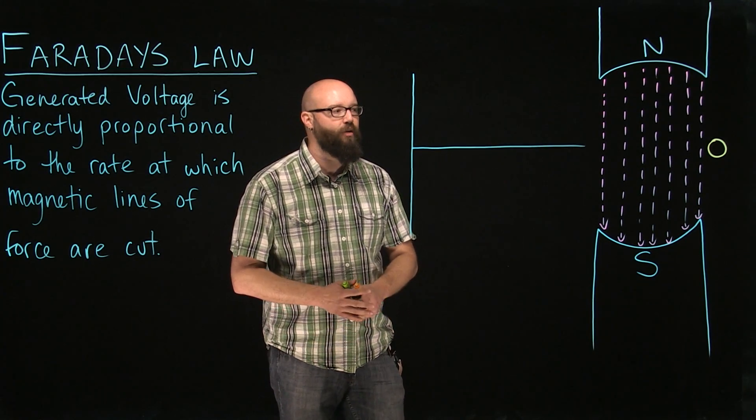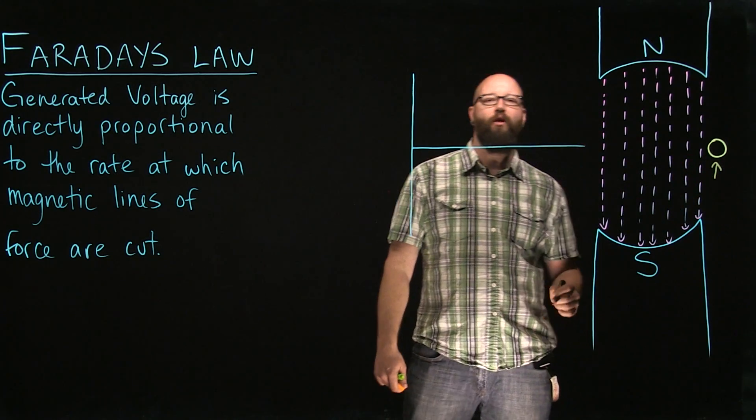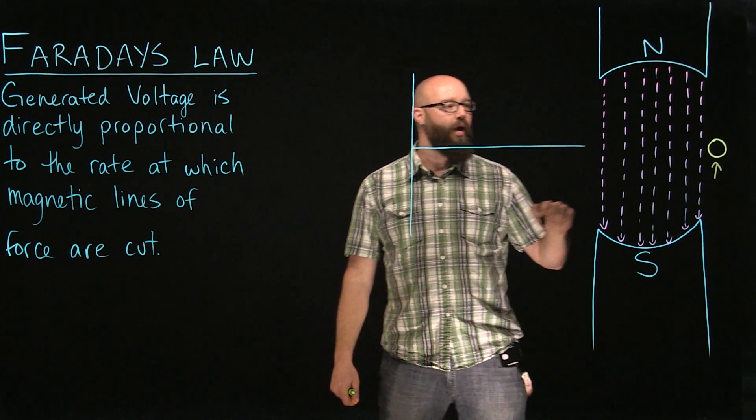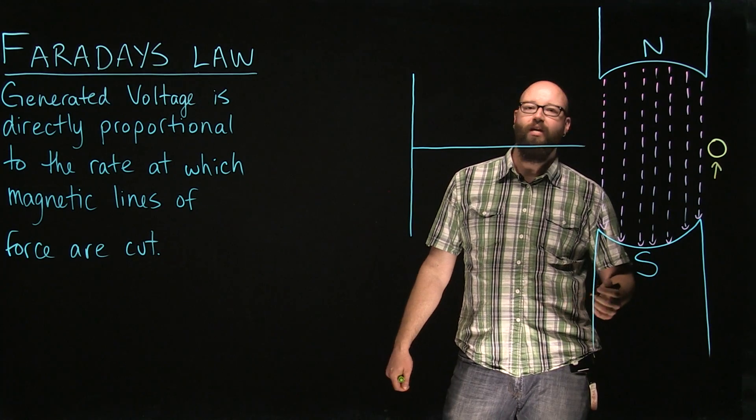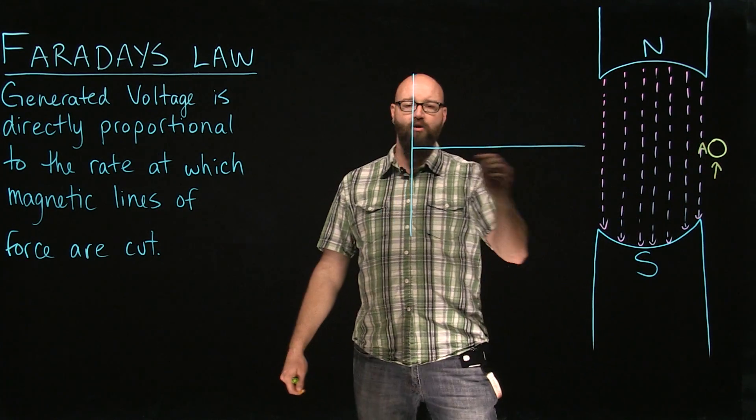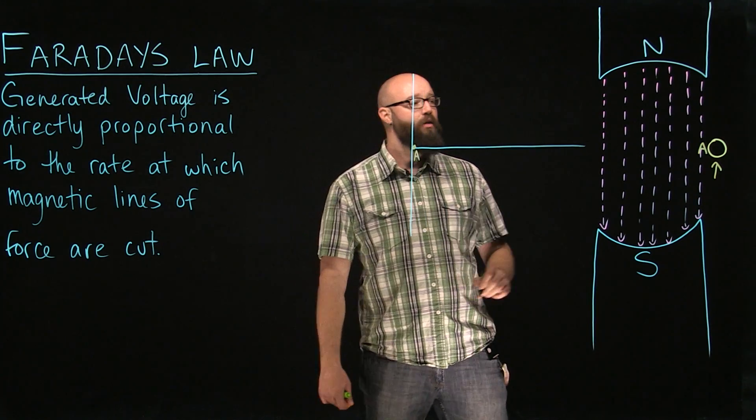If we take a look at where the position of the conductor is right now, if we imagine that our conductor is moving this direction or up right now, we're always going to move in a counterclockwise rotation. Right now we're not actually cutting through any of those lines of force, so we're not getting any generated voltage. Let's call this position A. Over on our Cartesian plane, I'm going to plot position A right here.